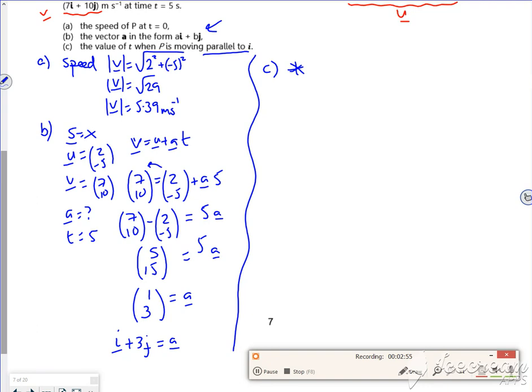So we're going to use that idea that if it's moving parallel to i, its velocity in the j direction is equal to 0. Now to do that, we need an equation in general terms for the velocity. So we need a general equation for the velocity.